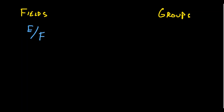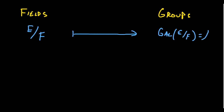Before I show you the statement of the theorem, it's important that we understand what we mean by the Galois correspondence, which the fundamental theorem is all about. The idea is that we have these two categories of objects: over here our fields, and over here our groups. Our problem is usually motivated by the following situation. We have some field extension E over some base field F. We can turn this into a group by taking the Galois group, Gal of E over F. When this is a Galois extension, the order of this group equals the degree of the extension.